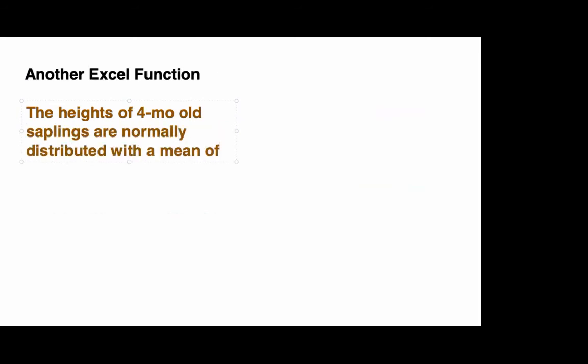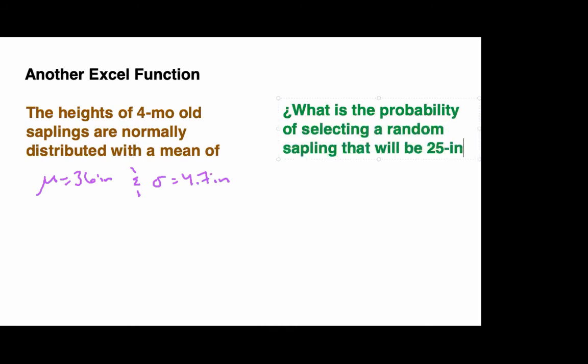Here's the problem we will use. The heights of 4-month-old saplings are normally distributed with a mean of 36 inches and a standard deviation of 4.7 inches. Our question, what is the probability of randomly selecting a sapling that will be 25 inches or less? The mathematical notation would be p of x less than or equal to 25. The function we want to use is the norm dist function. There is no s in the middle. This is not the norm s dist function. The first argument is the value 25. Recall, Excel always gives the area to the right, and this problem is asking for the area under the normal curve to the left of 25, less than 25. The next value we enter is the mean, which is 36, and then the standard deviation, which is 4.7. We enter these two values next. The last thing we enter is true, and we always enter true.